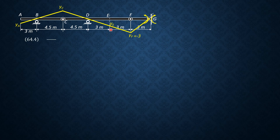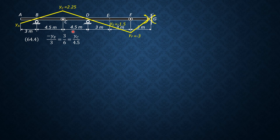The rest of the ordinates are determined by similar triangles. Negative Y sub E is to 3 equals 3 is to 6 equals Y sub C is to 4.5. So Y sub E equals negative 1.5, and Y sub C equals positive 2.25. Then in the left diagram: negative YA is to 3 equals 2.25 is to 4.5, so YA equals negative 1.5. That's the influence line for moment reaction at G.